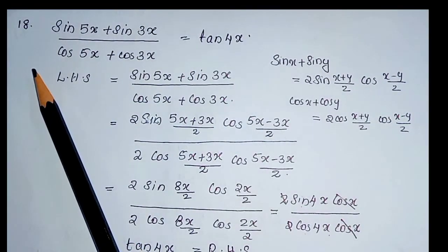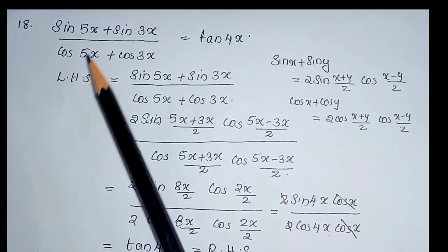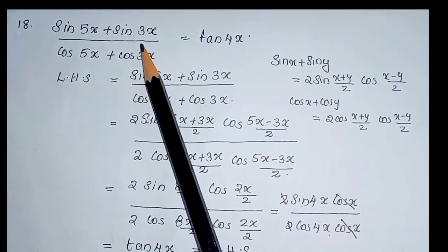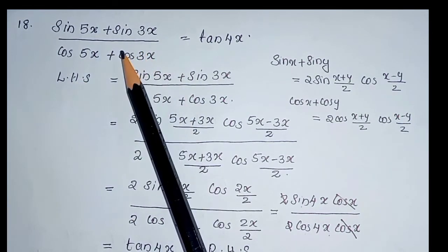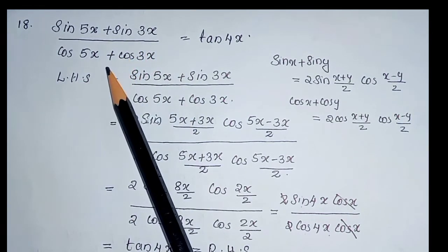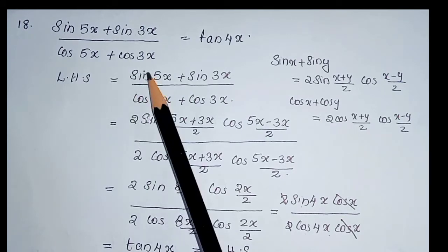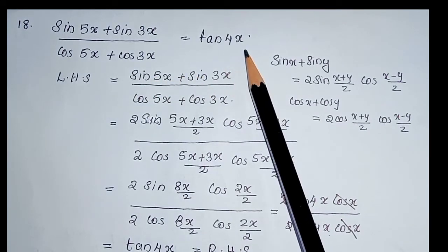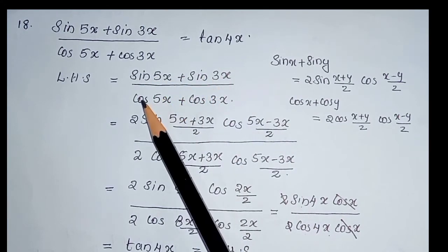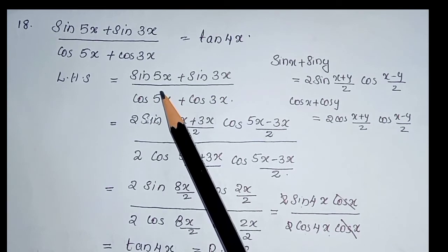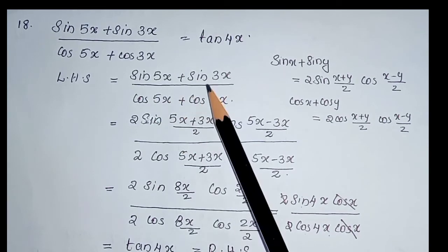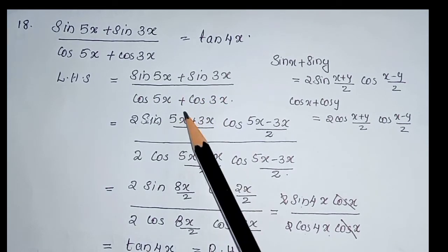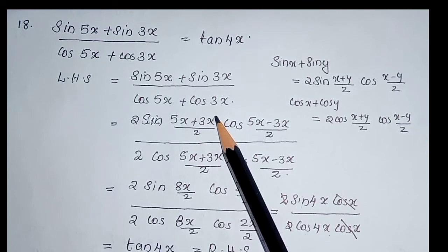Next, question number 18. Sin 5x plus sin 3x divided by cos 5x plus cos 3x equal to tan 4x. Here, LHS is sin 5x plus sin 3x divided by cos 5x plus cos 3x.